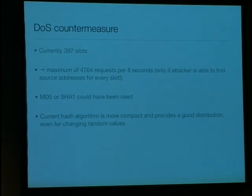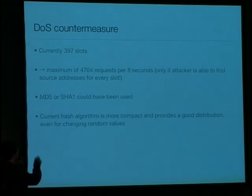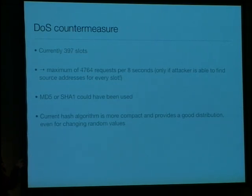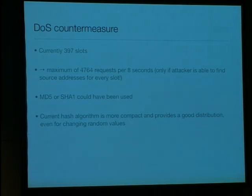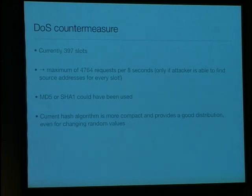The number of slots is 397. That means only a maximum of 4,764 requests per eight-second time frame is allowed — but only if the attacker is able to find source addresses so that the distribution of slot numbers is quite uniform. Clifford developed his own hash algorithm which is quite compact and provides pretty good distribution even for the changing random values. You can also use MD5 or SHA1 — all you need is something to get a value from zero to 396 to get one of your slots.